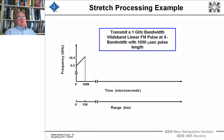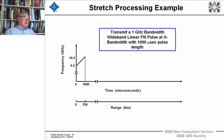This is the stretch processing example. We're going to transmit a one gigahertz bandwidth wideband linear FM pulse at X-band, that's a millisecond long — a thousand microseconds of pulse length. In the frequency domain, it goes from 9.5 gigahertz up to 10.5 gigahertz, and it does that in a thousand microseconds. In microseconds going way out, that corresponds to a range window of 150 kilometers, and the pulse could go out a thousand kilometers.